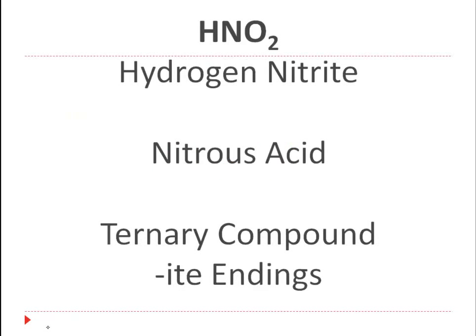What do you do though when it ends in I-T-E? This isn't '-ate' anymore — this is an '-ite.' Now '-ate' and '-ite' differ by their number of oxygens: hydrogen nitrate has 3 oxygens, hydrogen nitrite has 2. So with hydrogen nitrite, I drop the word hydrogen — that's gone — and we're going to call it nitrous acid.